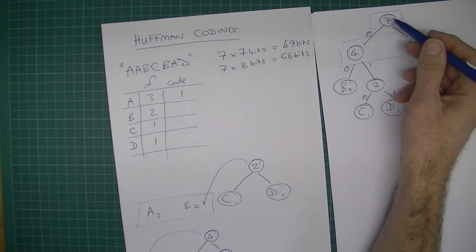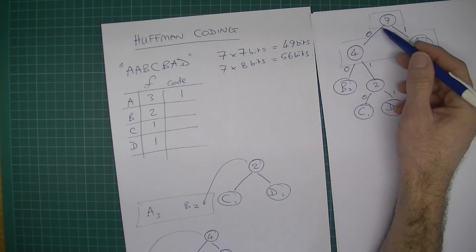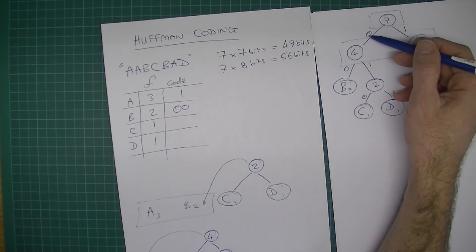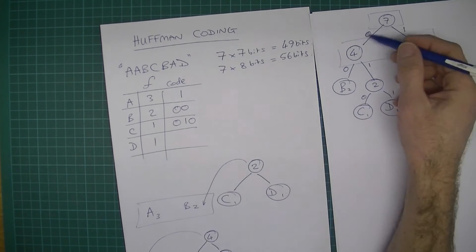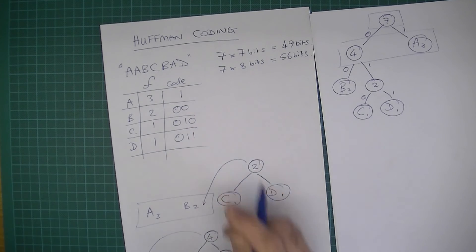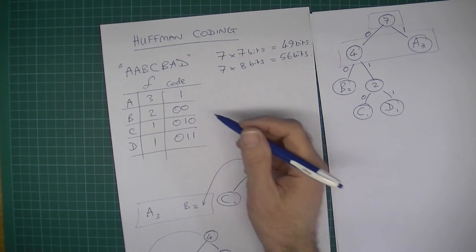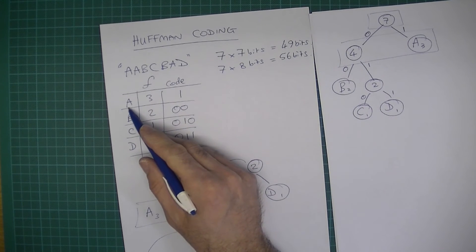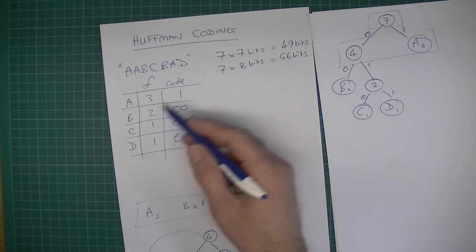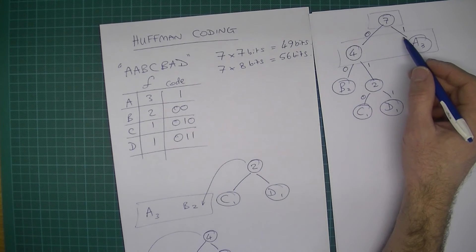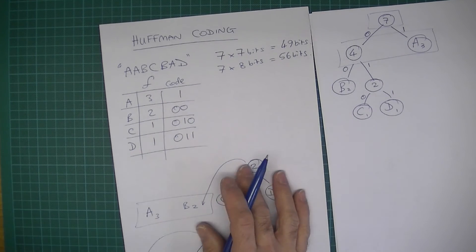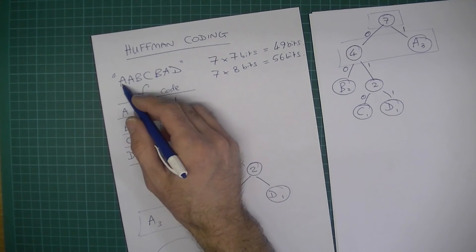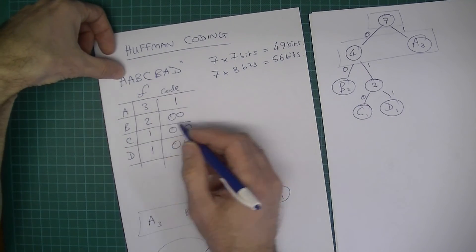The code for letter B is going to be 00. What you might notice is the most frequently occurring letter, which in this case was the letter A with a frequency of three which is greater than the other ones, is going to have a nice short code, and that's important.